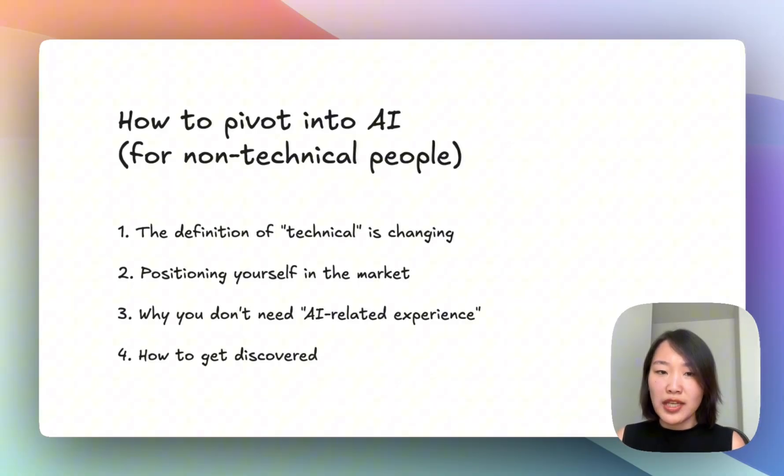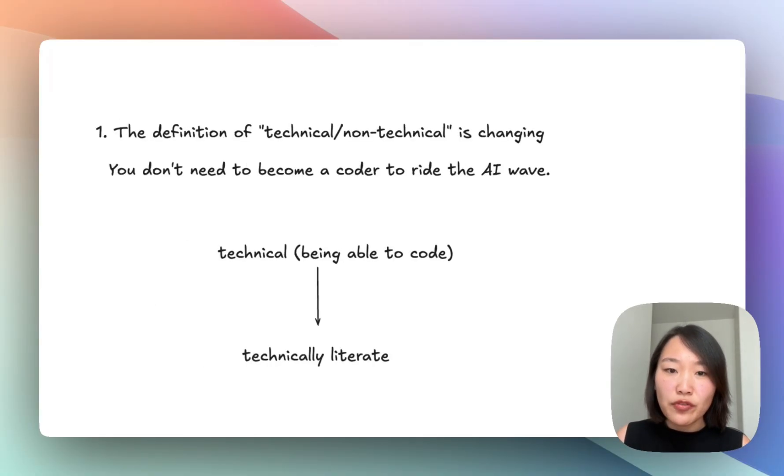Today I'll talk about how non-technical people can pivot into the AI field. First of all, I believe that in the age of AI, the definition of being technical itself is changing. We used to think of technical as equivalent to being able to code, but now that AI can code faster than humans, I think we should revisit this dichotomy. If you don't code, I personally think that instead of trying to learn coding from scratch or trying to get technical, you should try to become technically literate.